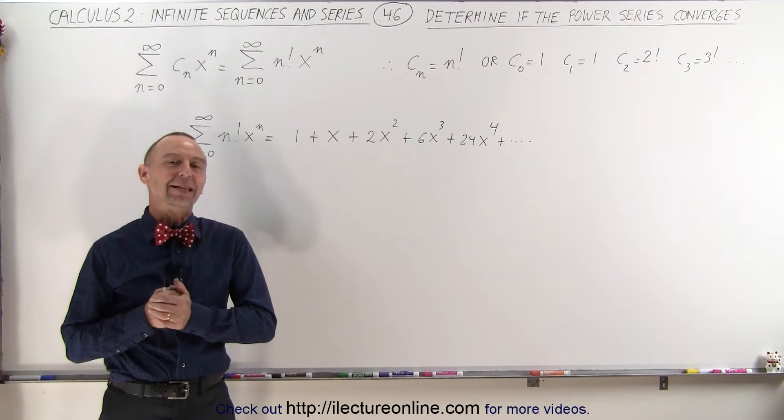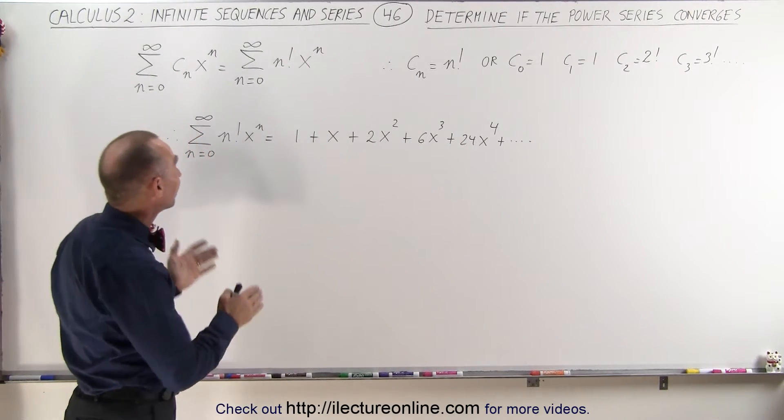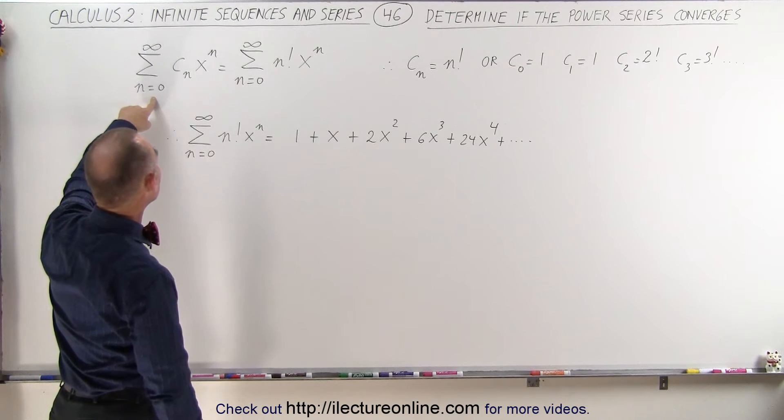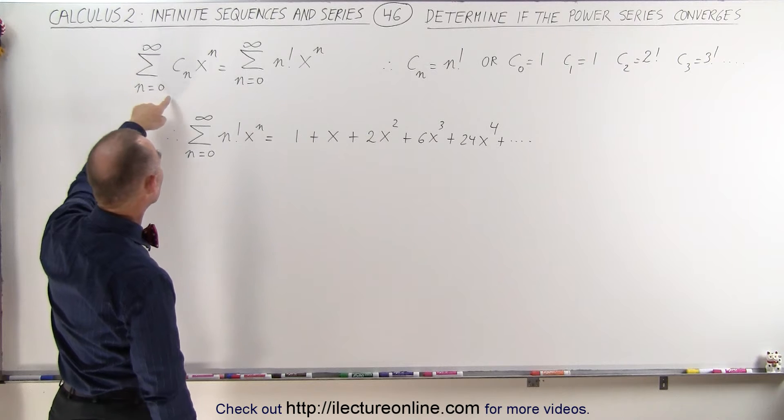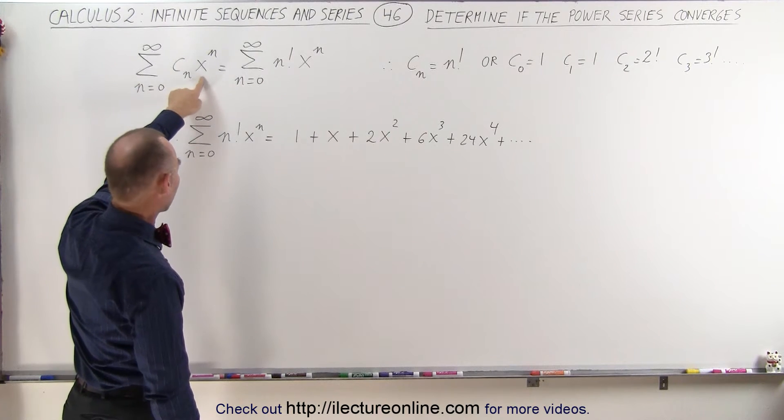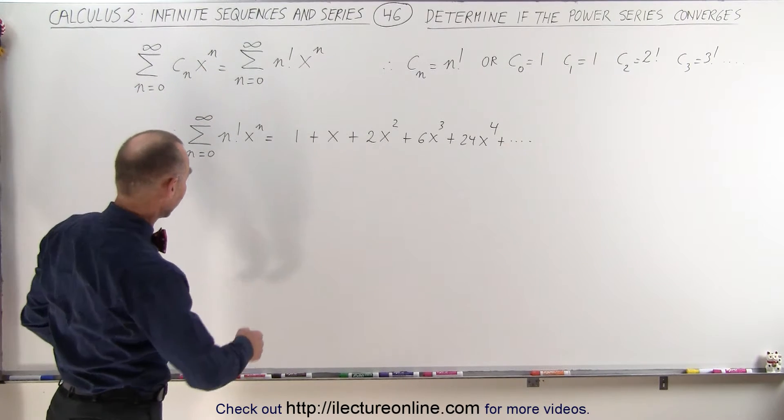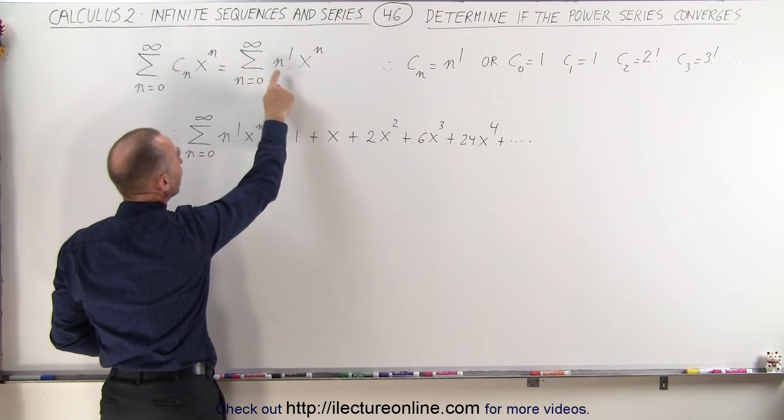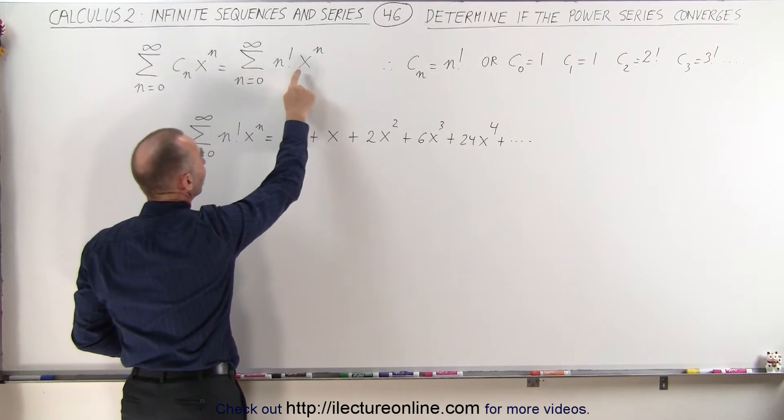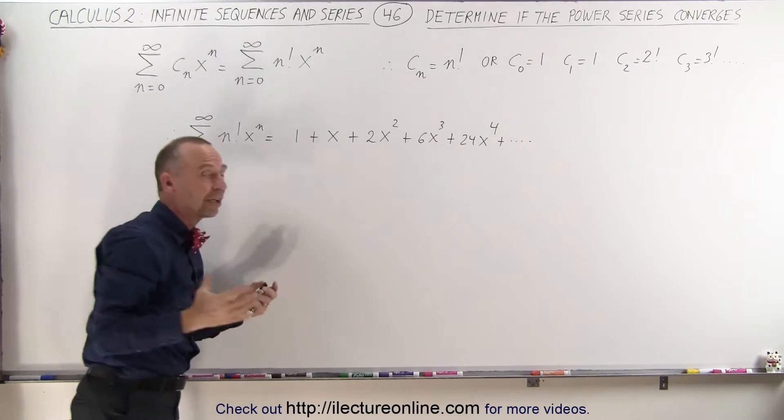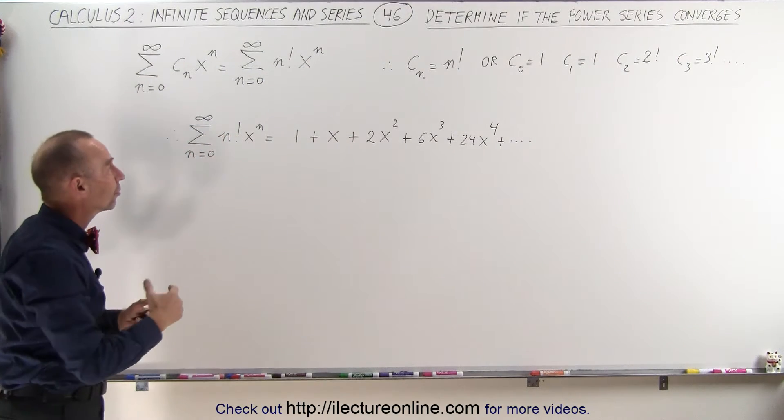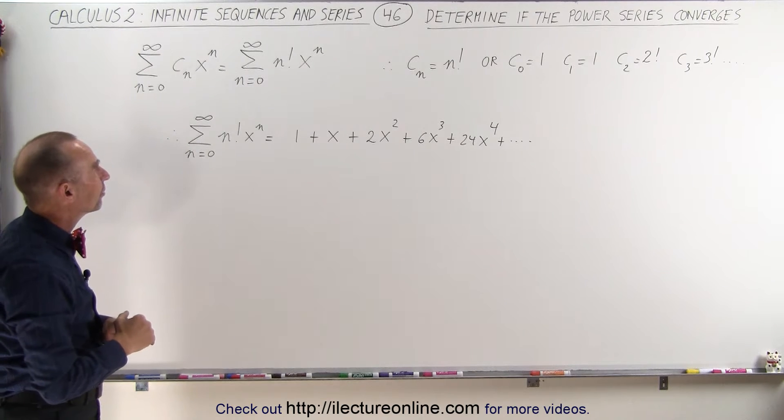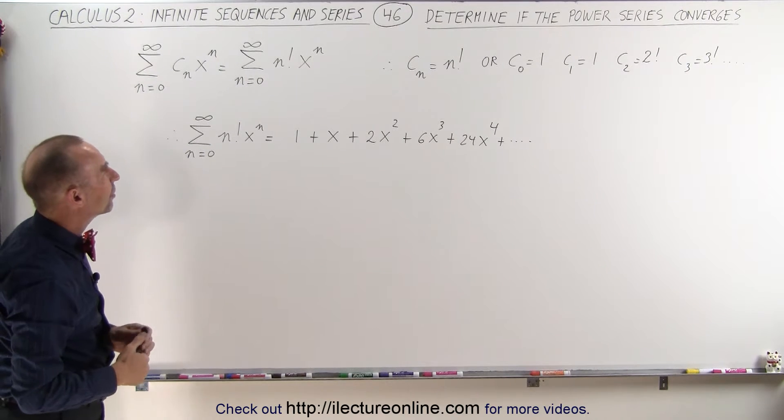Welcome to I Lecture Online. Now let's see if we can figure out if this power series converges. So the general form is from n equals 0 to infinity, the infinite sum of C sub n times x to the n. And in this case, it is equal to the infinite sum from n equals 0 to infinity of n factorial times x to the n. Now n factorial are going to be constants, so they become the coefficients of the power series.